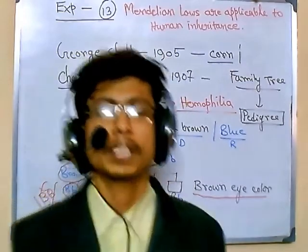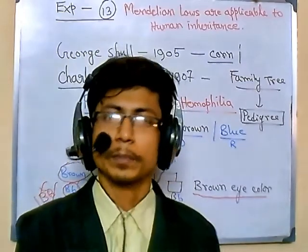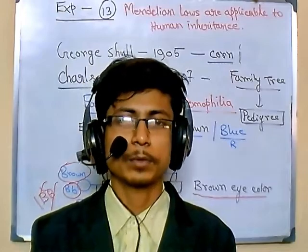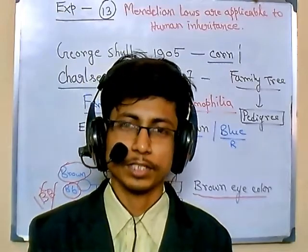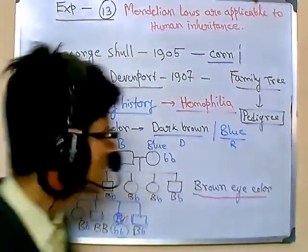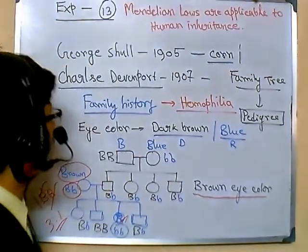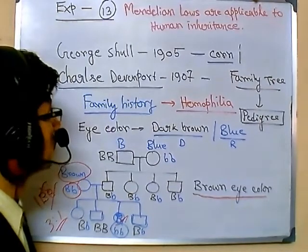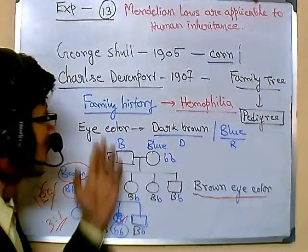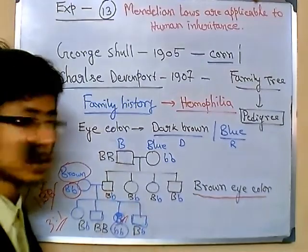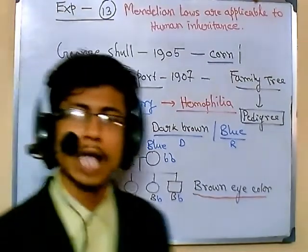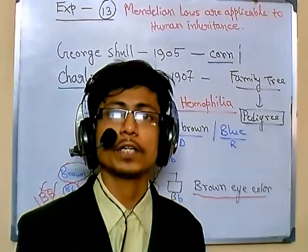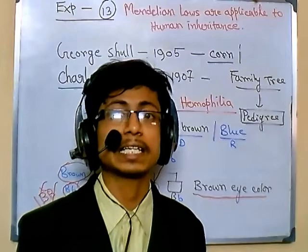Welcome back. We are talking about DNA from the beginning — the primary set of experiments that lead to the foundation of modern genetics. In Experiment 13, we saw the experiment conducted by Charles Davenport, which showed that Mendelian laws are applicable in certain aspects of human genetics.